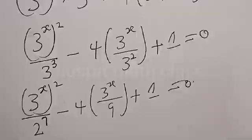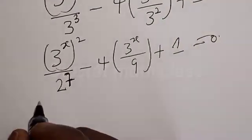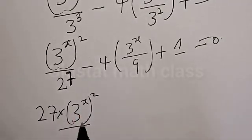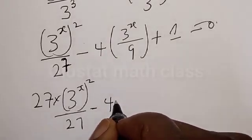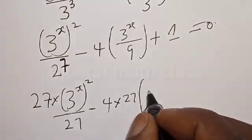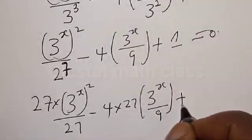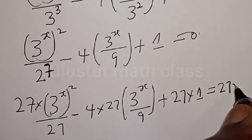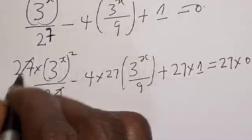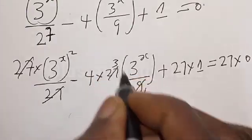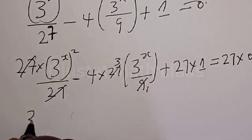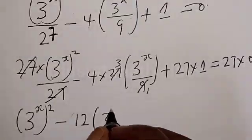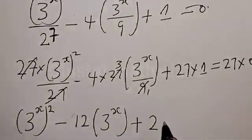Let's multiply all terms by 27. We have 27 times (3^x) squared divided by 27, minus 4 times 27 times 3^x divided by 9, plus 27 times 1 equals 0. The 27s cancel in the first term, and 27 divided by 9 gives 3, so 4 times 3 is 12. This simplifies to (3^x) squared minus 12 times 3^x plus 27 equals 0.